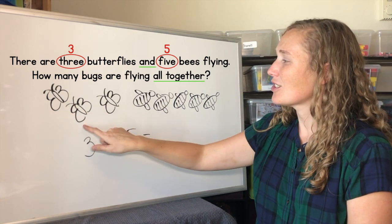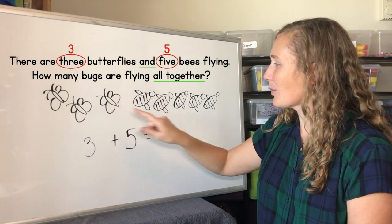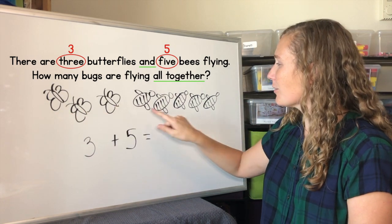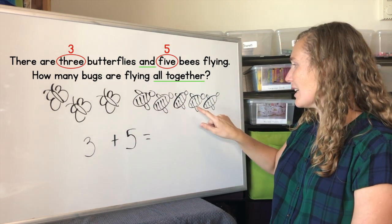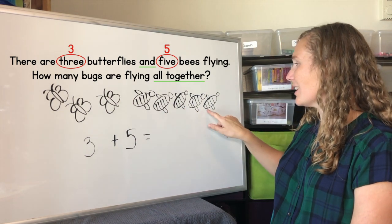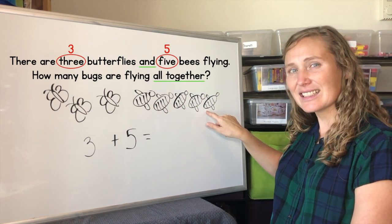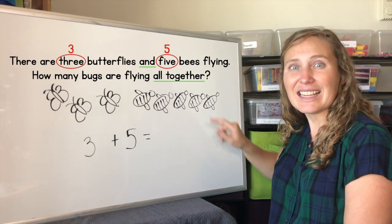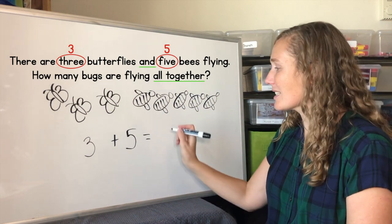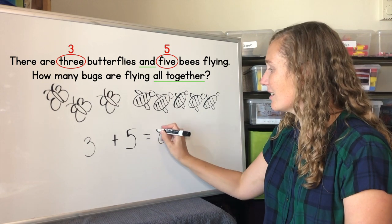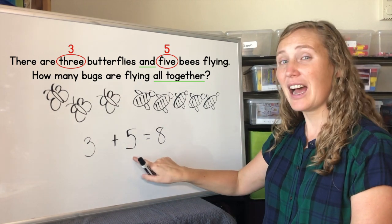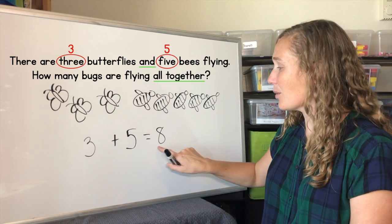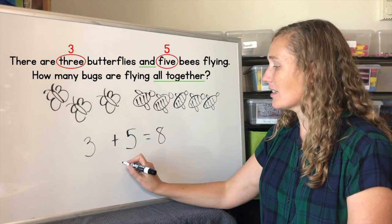One, two, three, four, five, six, seven, eight. Eight bugs. Three plus five equals eight.